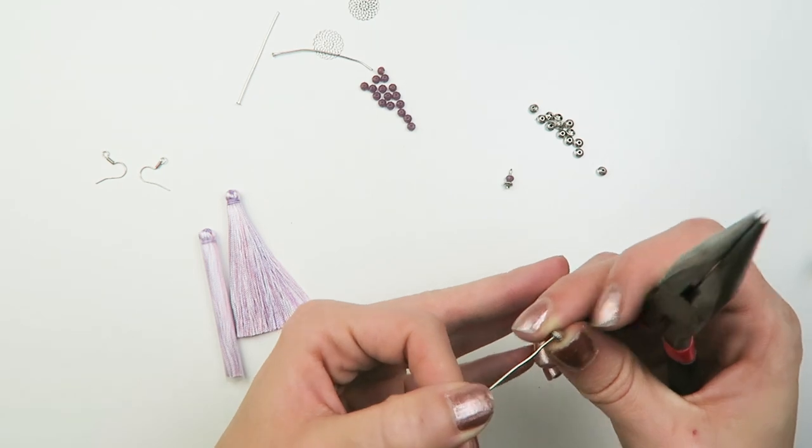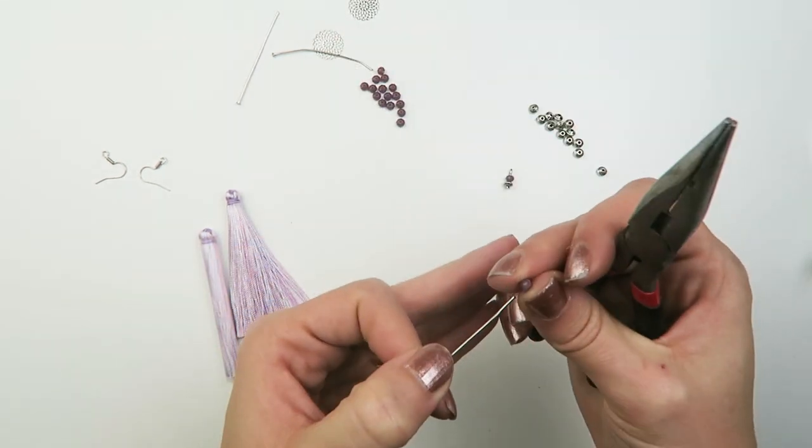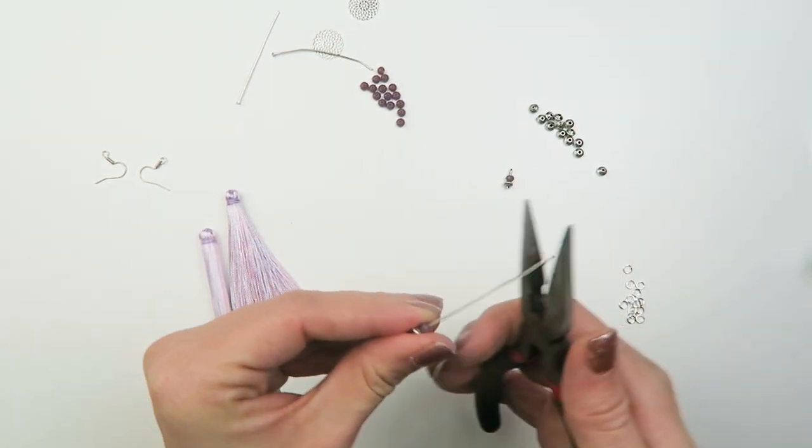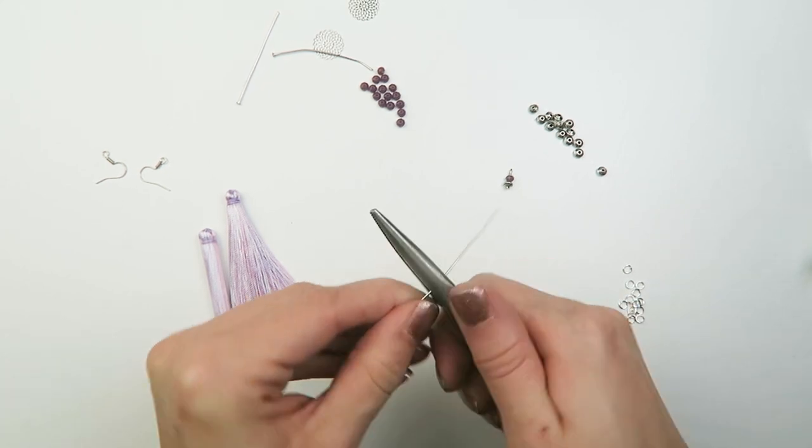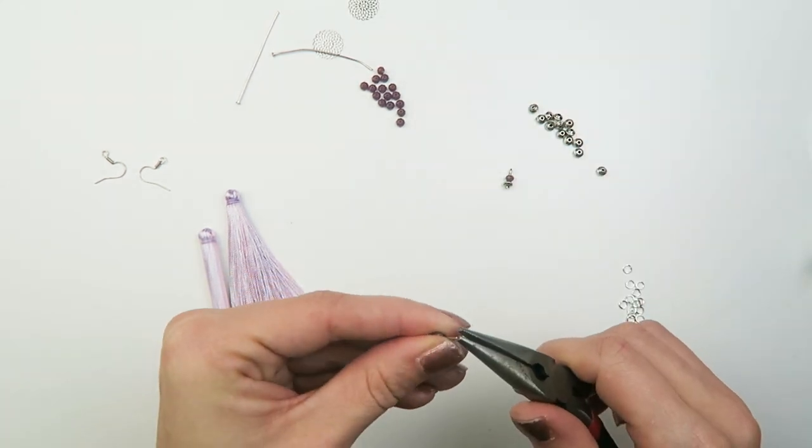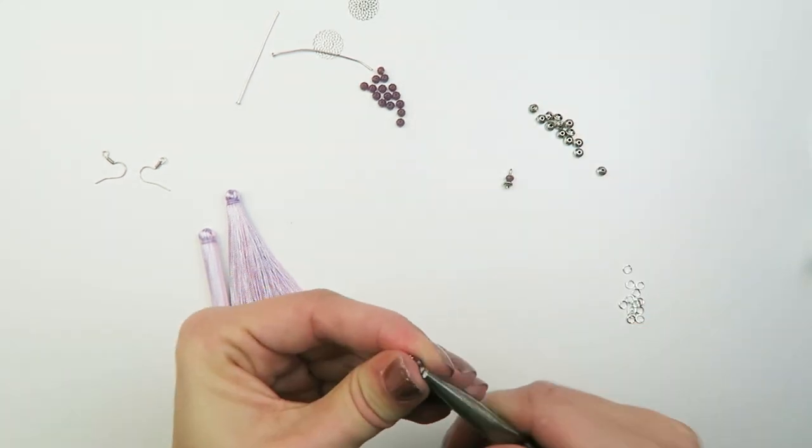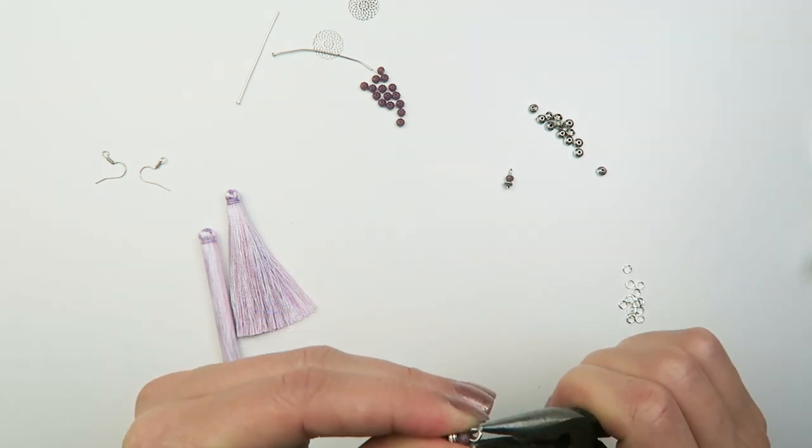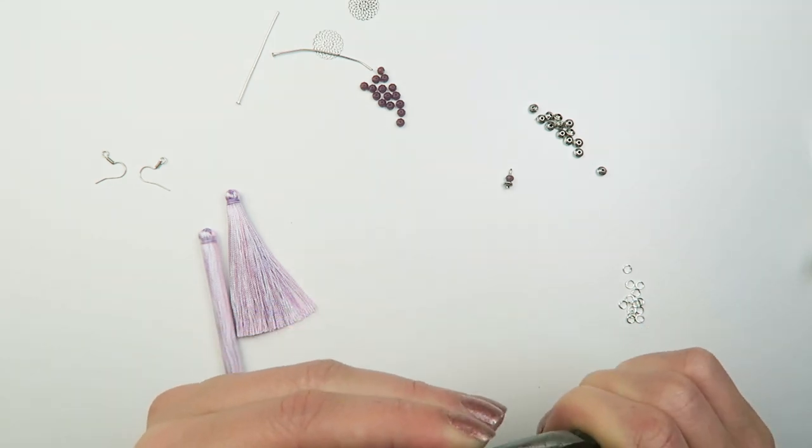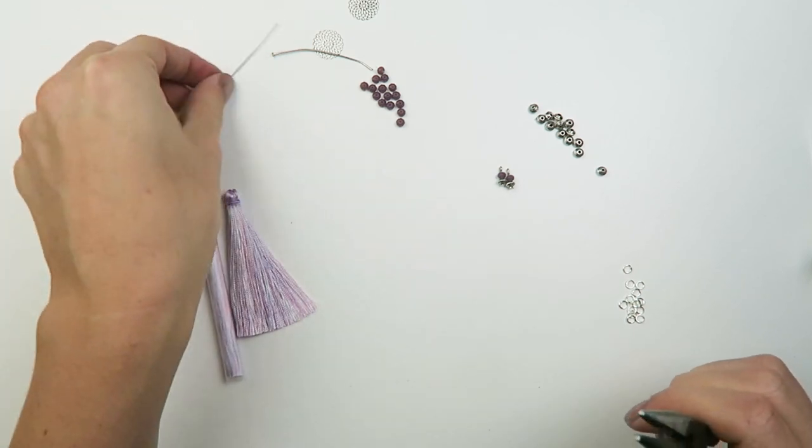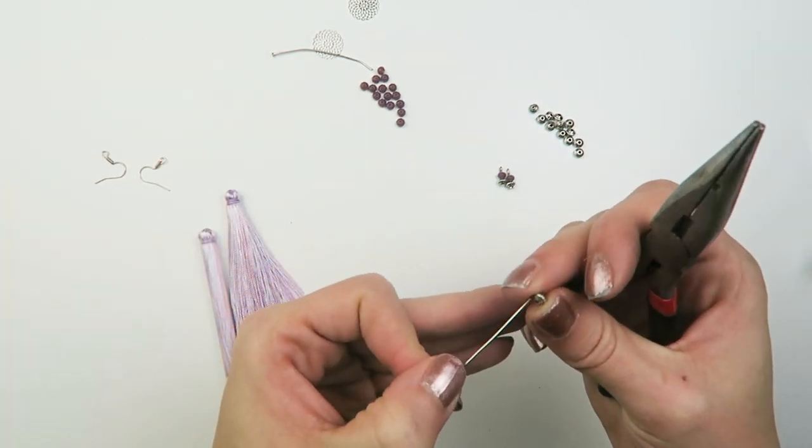So we're going to use these as charms on each side of our tassel. So I'm just going to make four of these. You don't have to put these extra charms on, or you can use different charms if you like that better.